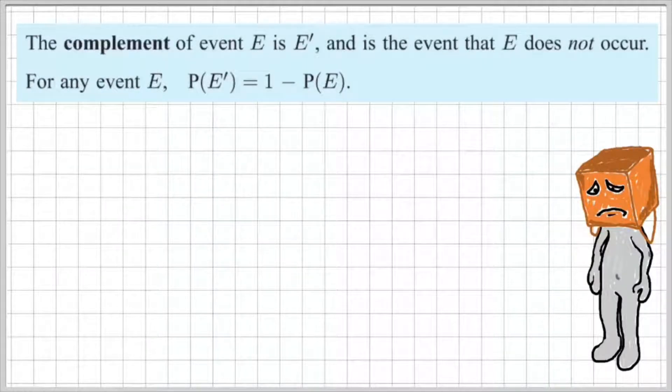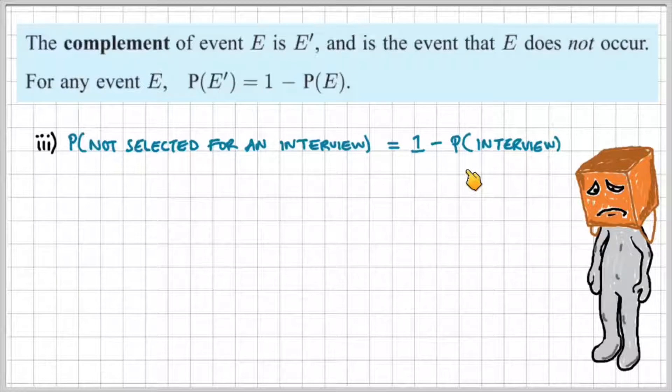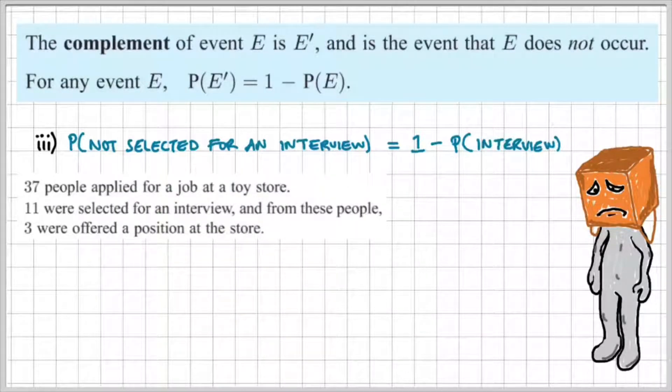So in our example, the probability of not being selected for an interview would be equal to 1 minus the probability of being selected for an interview. Now from the information, we know that 11 people were selected for an interview.